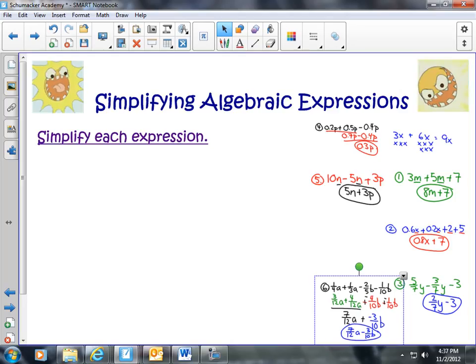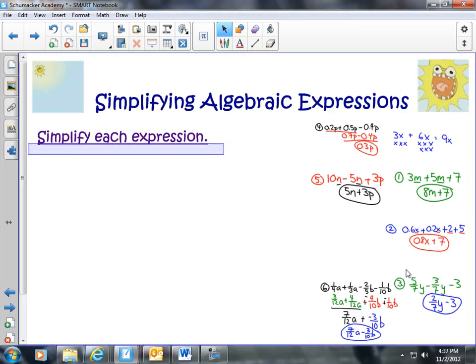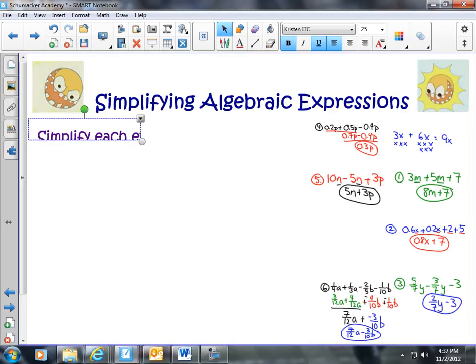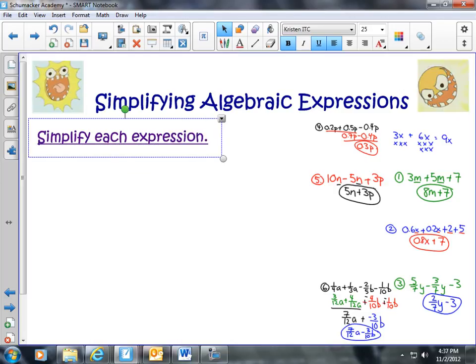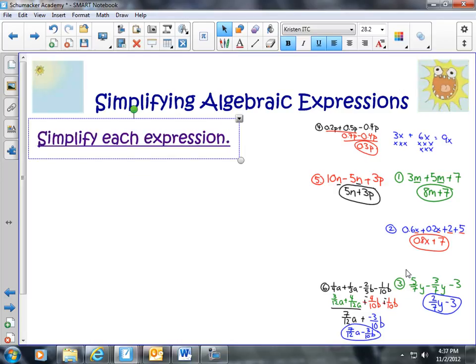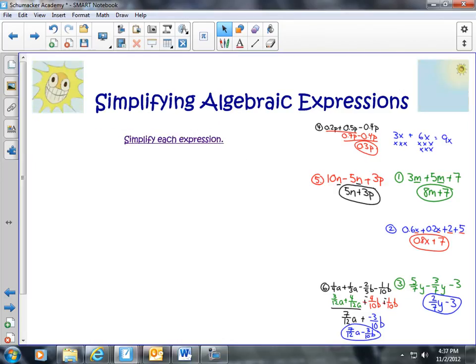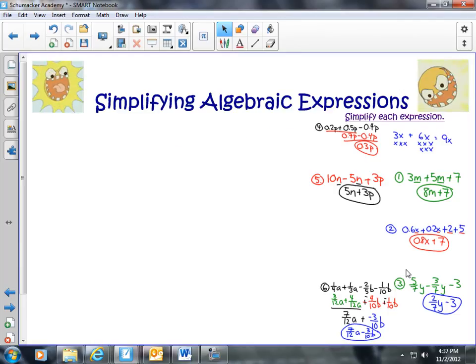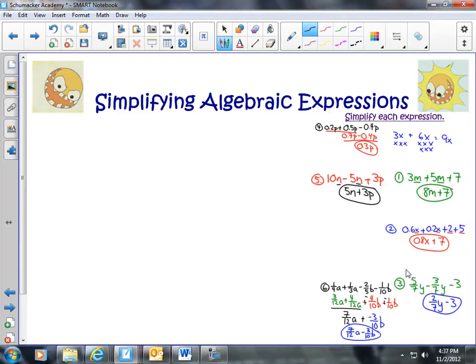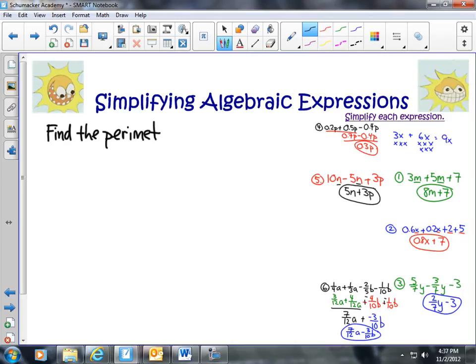Okay, this is how you're going to go ahead and do simplifying algebraic expressions. Now, I am going to show you one other problem, just because I know that my students have a problem like this. And so I want to, I'll just put this over here. And for our last set of the problems, we're going to do find the perimeter of each figure. Find the perimeter of each figure.